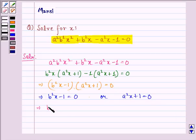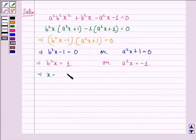This implies b square x equals to 1 or a square x equals to minus 1. This implies that x is equal to 1 upon b square or x is equal to minus 1 upon a square.